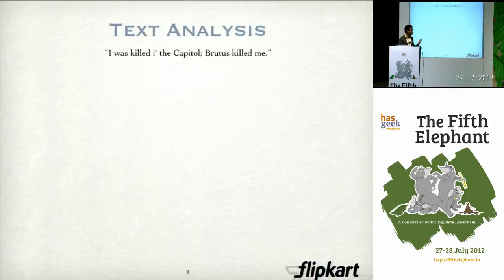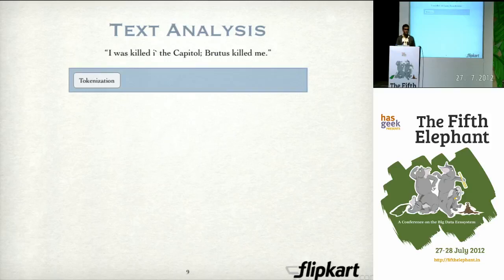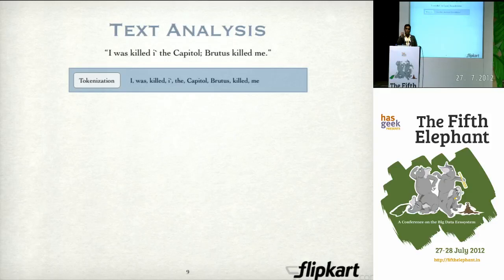One of the first things a search engine does when faced with a query or with documents it needs to index is that it does some text analysis. Let us take an example — a phrase from Shakespeare's Julius Caesar. The first thing it does is what is known as tokenization, where you take this string and break it up into individual words, or what we refer to as terms. You remove all punctuation and break it down into individual words. If we do not do this, the search engine will end up like a grep, looking through all the text. Instead, we break it up into individual words, and from here on the search engine only deals with terms, not whole sentences.